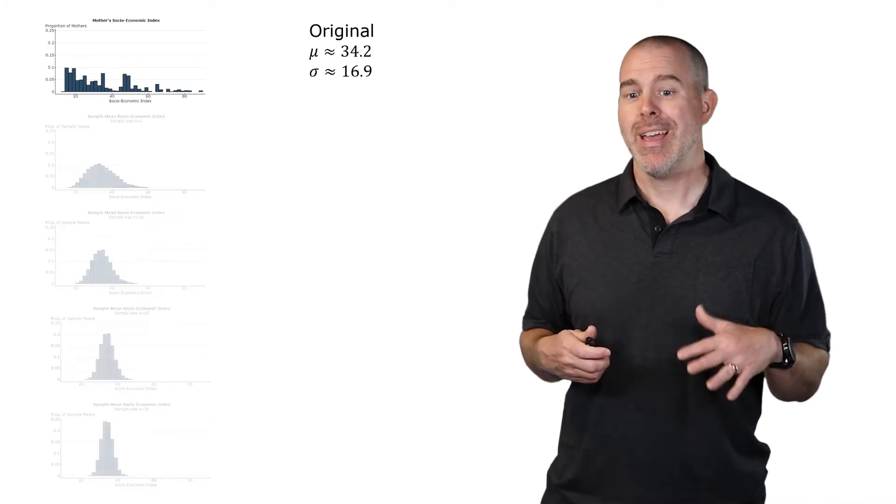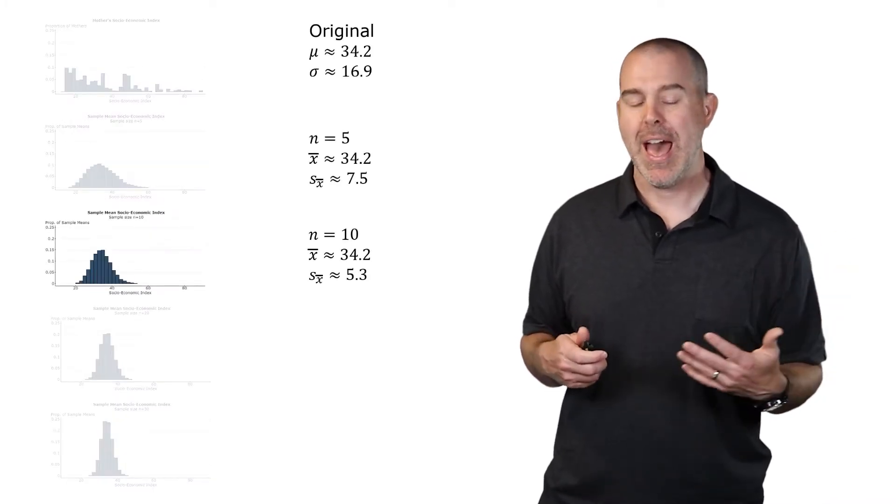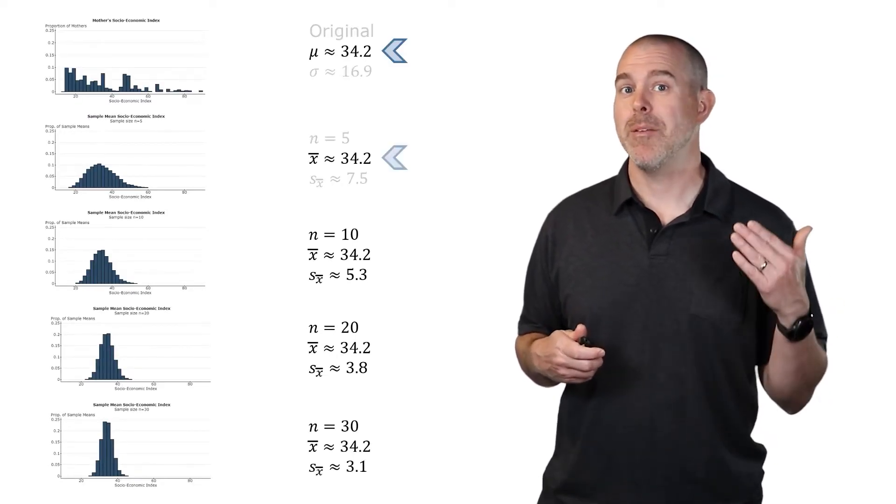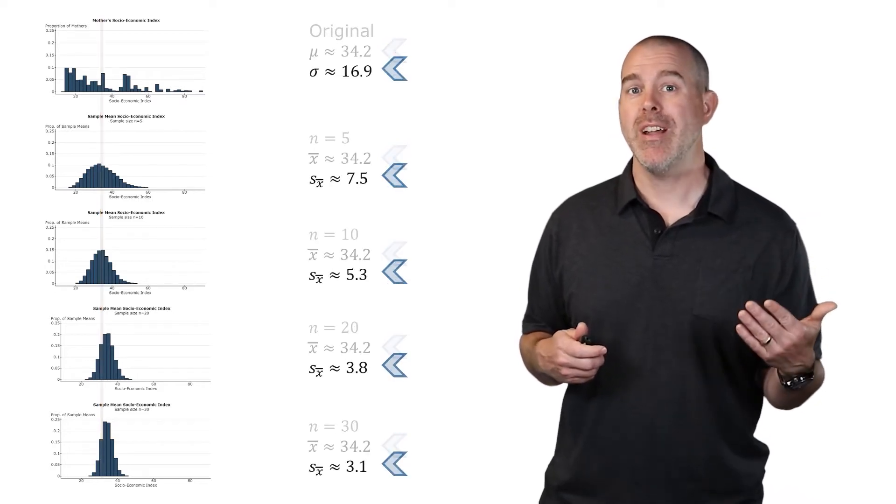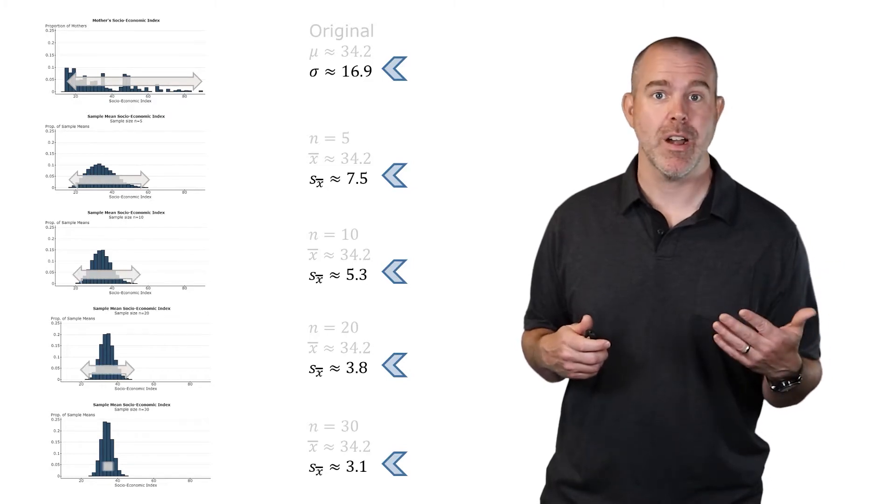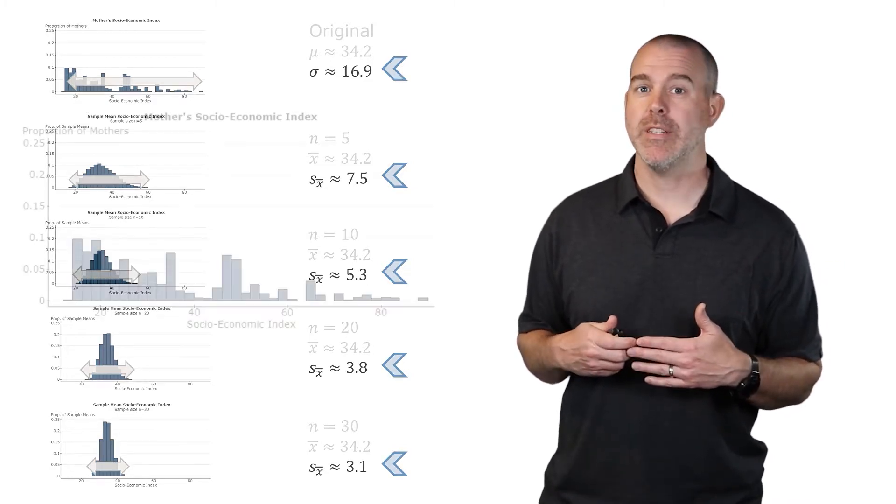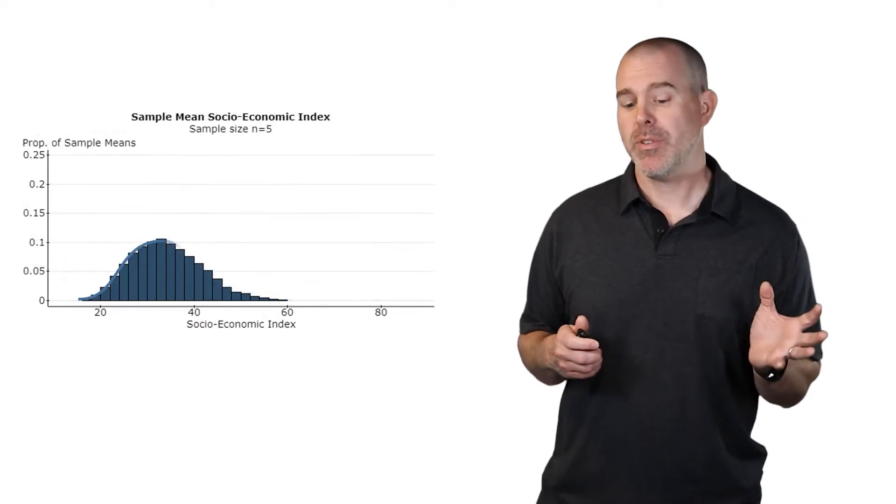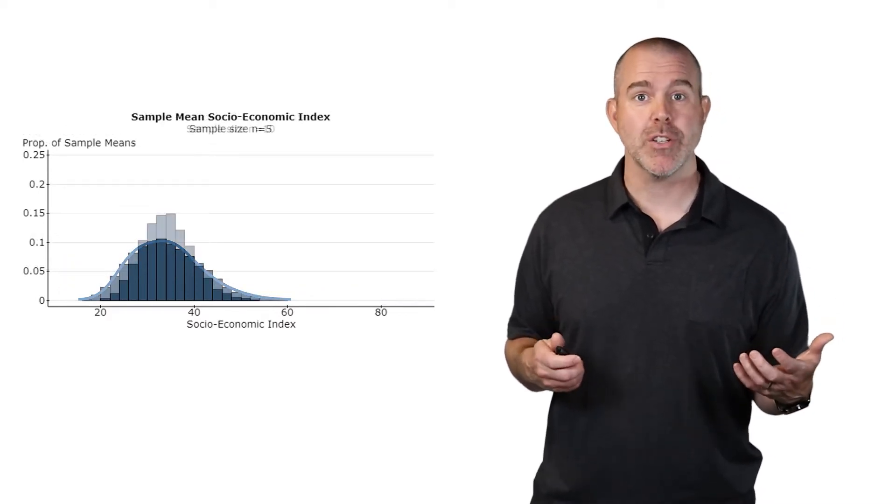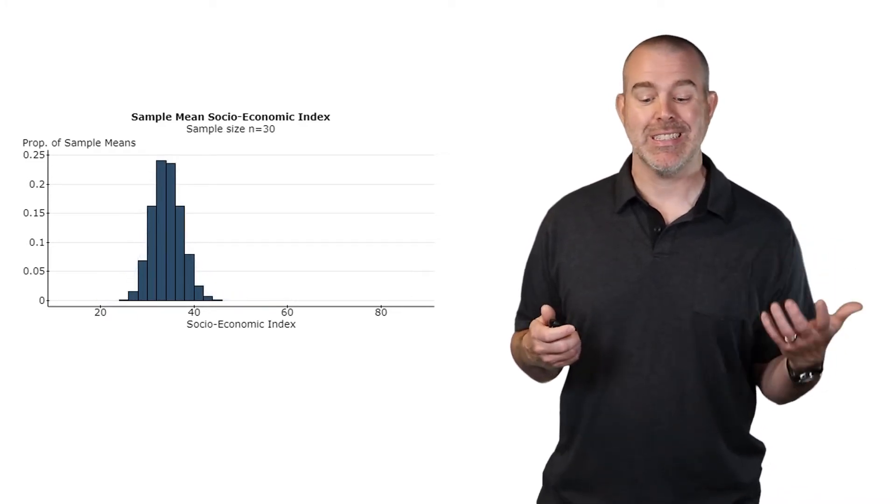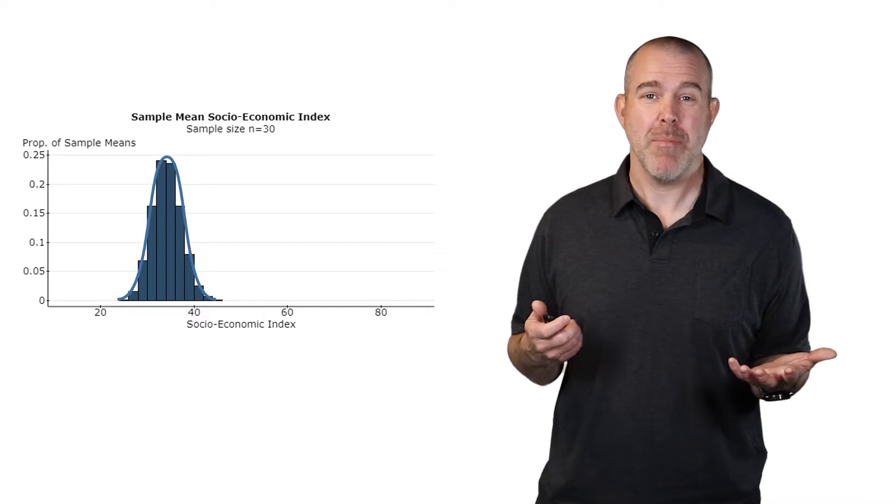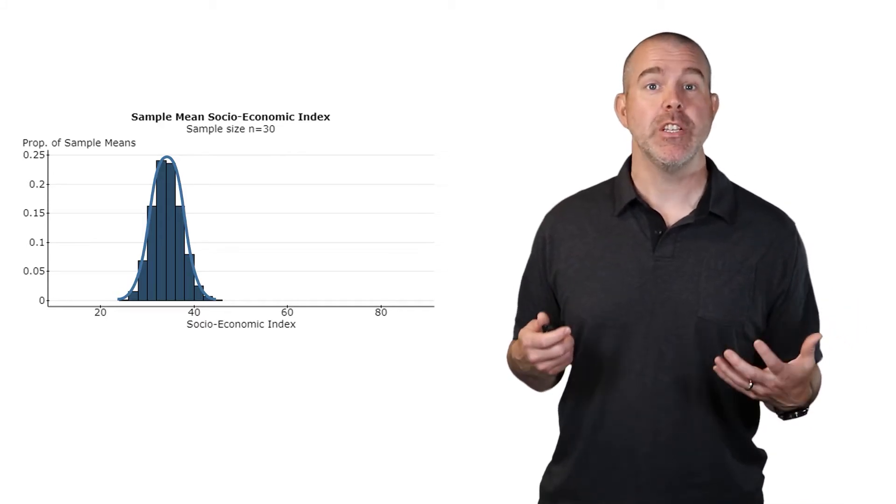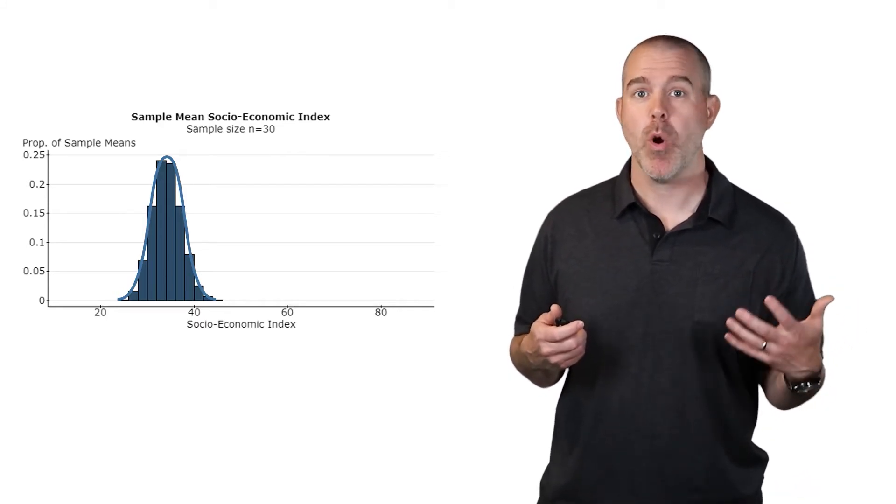If we put them all up here, kind of compare the original 34.2, 16.9, then we have the other three or four different sample sizes. You can see the trend here is that the means are all the same, they're all 34.2, but the standard deviation is getting smaller and smaller as the sample size increases. What about the distribution shape? For the mothers, very skewed right. For the sample size 5, still skewed right, becoming more bell-shaped. Size 10, then 20, and then 30. This is pretty bell-shaped by the time you get to a sample of size 30, and that is a huge result. As the sample size increases, the distribution becomes more symmetric, more bell-shaped.